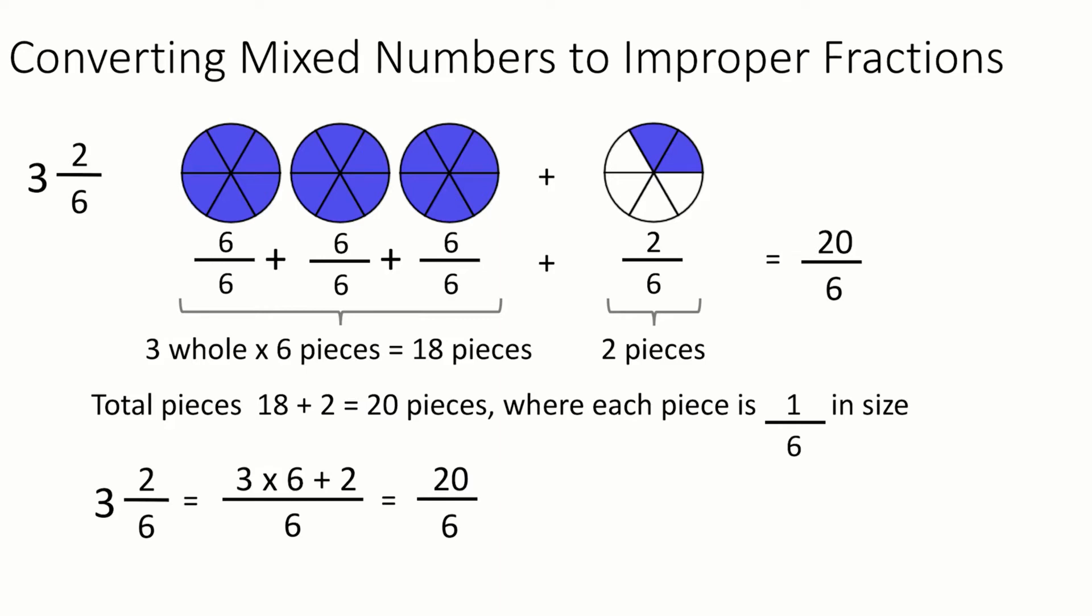So we can get a formula here to convert from a mixed number to an improper fraction. So what we do is we start with the number at front, in this case the 3. And we multiply by how many pieces made up a whole, so in this case 6. So we say 3 times 6, which goes in the top, and that gives us 18.